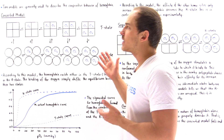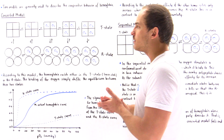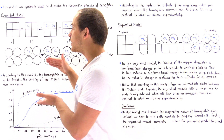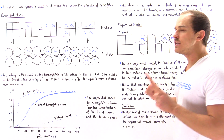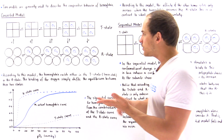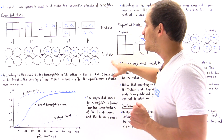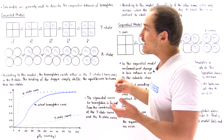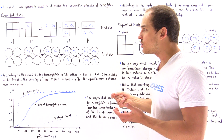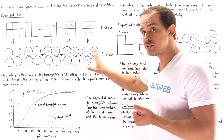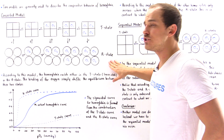Let's begin with the concerted model. The big point about the concerted model is that hemoglobin can only exist in two states: it can either exist in the T state, the tense state, or it can exist in the R state, the relaxed state. By binding oxygen onto the hemoglobin molecule, all we're doing according to this model is shifting the equilibrium between these two states.